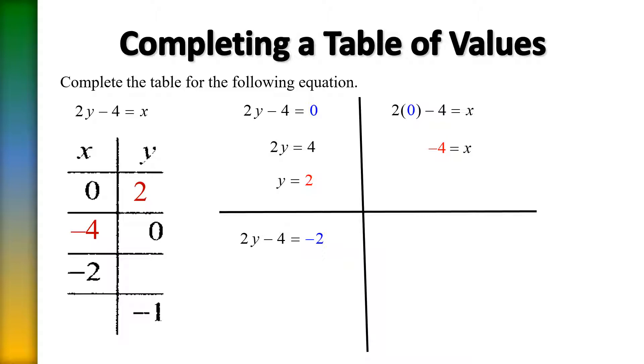That's correct. Add 4 to each side. Then divide by 2 and y equals 1. So that means when you plug in a negative 2 for x what you get out for y is a 1.